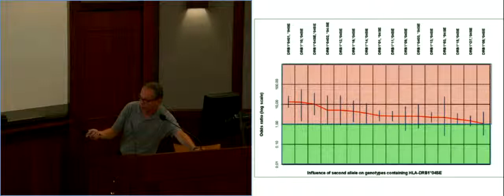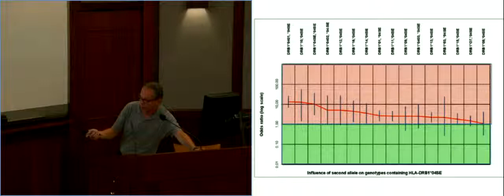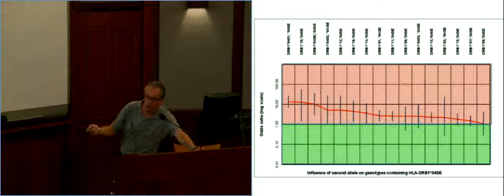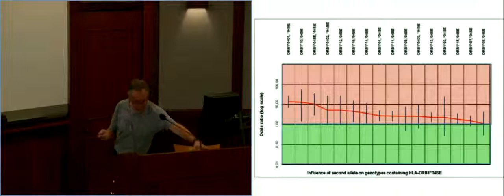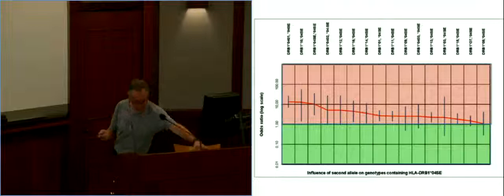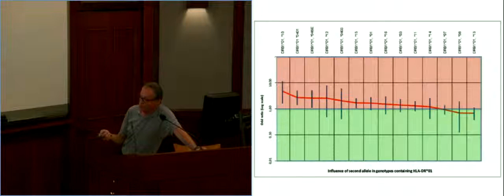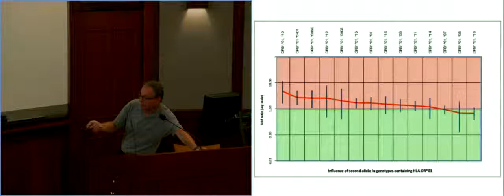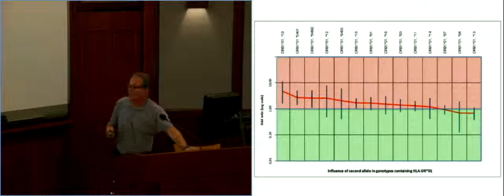And you have similar data. This is for genotypes containing DR4-SE, for shared epitope, which means DR4-4, 4, 5, 4, 8. You also have some kind of tempering of the genotype effect by the second allele. And with DR beta-1-01, you also have the similar effect, except that the risk starts lower, and you have the impression that a few alleles, like DR13 or DR8, can really take the risk down below one.